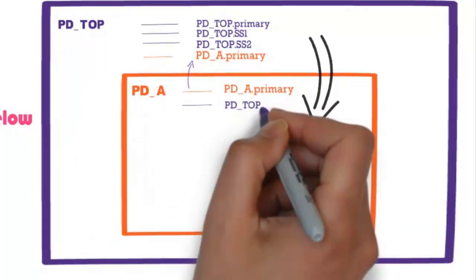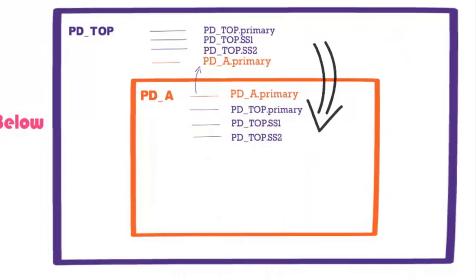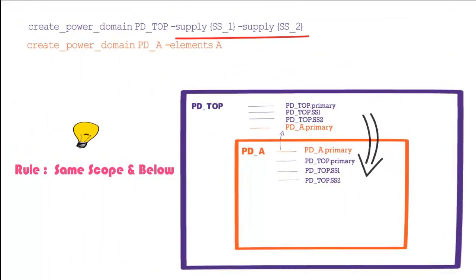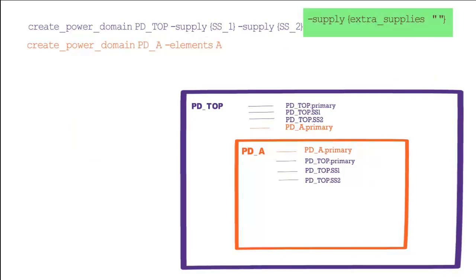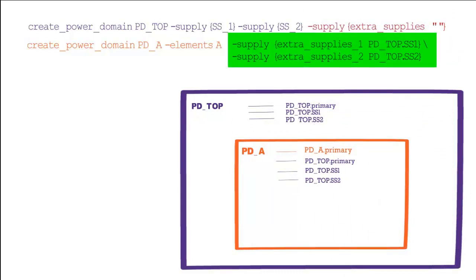Likewise, the supplies in pdtop are available in pda. This can create unreasonable expectations for power grid design during physical implementation. Synopsys provides a few keywords to control the availability of supply sets. Using 'extra_supplies' with an empty list, as shown, will keep only the supply sets of that power domain — now pda.primary is not available in pdtop.